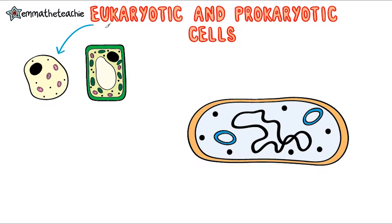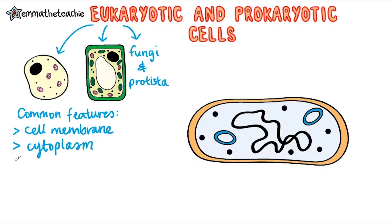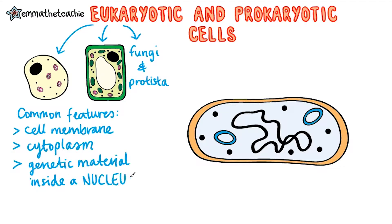Animal and plant cells are both eukaryotic cells, as well as fungi and protista. We call them eukaryotic cells because they all have some features in common. They all have a cell membrane, a cytoplasm, and genetic material that is found inside a nucleus.